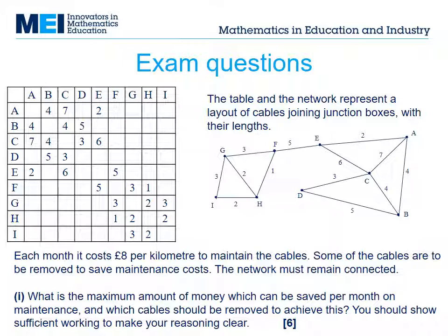Candidates have to realize that to save the maximum amount of money they have to find a minimum spanning tree. They can then choose whether to use Prim's or Kruskal's, or they could keep the bridge EF and work on the two remaining pieces separately. Candidates choose their approach and explain what they are doing.